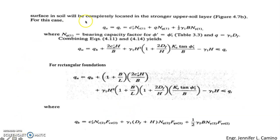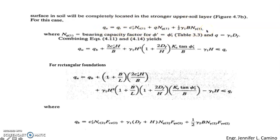To compute ultimate bearing capacity for the case where the failure zone is located entirely in the stronger upper soil, as illustrated in Figure B, a separate equation is used. In Figure B, the failure zone only occurs in the stronger upper soil layer and does not extend to the lower weaker soil. The bearing capacity factors can be obtained from the table presented in the previous discussion.